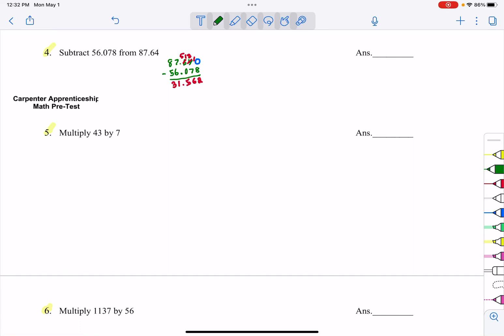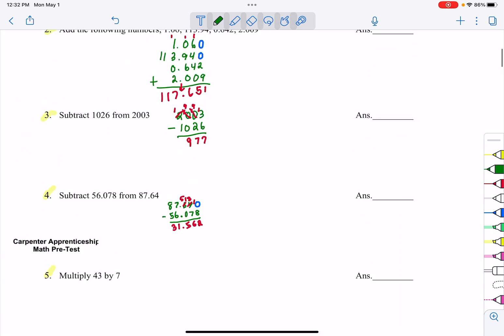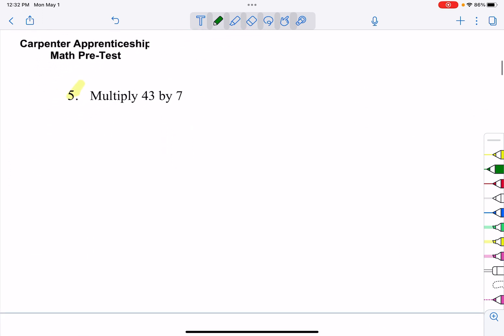In this video, we are going to practice some of the things you may see on a carpenter apprenticeship math pretest or aptitude test. Let's take a look at where we left off. We had done some subtraction by hand, and in this video we are going to continue. The instructions for this particular pretest say no calculators for 1 through 13, so we are going to do some of these by hand.